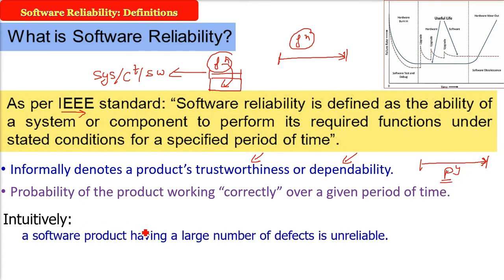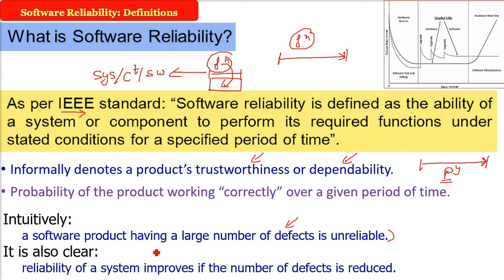Intuitively, a software product having a large number of defects is unreliable. It is also clear that the reliability of a system or software product will improve if the number of defects is reduced.